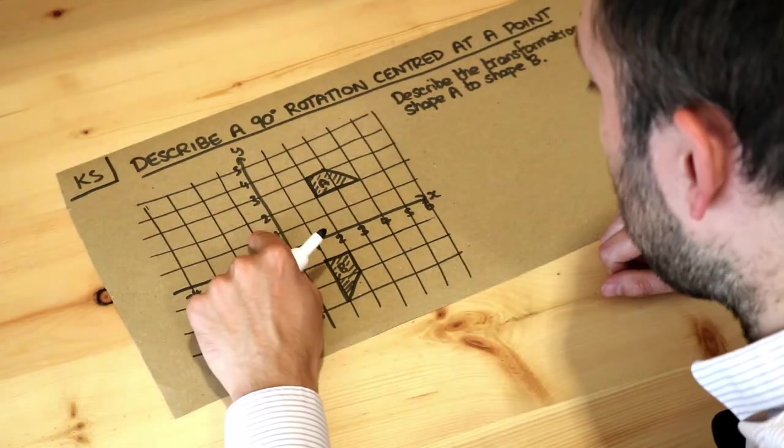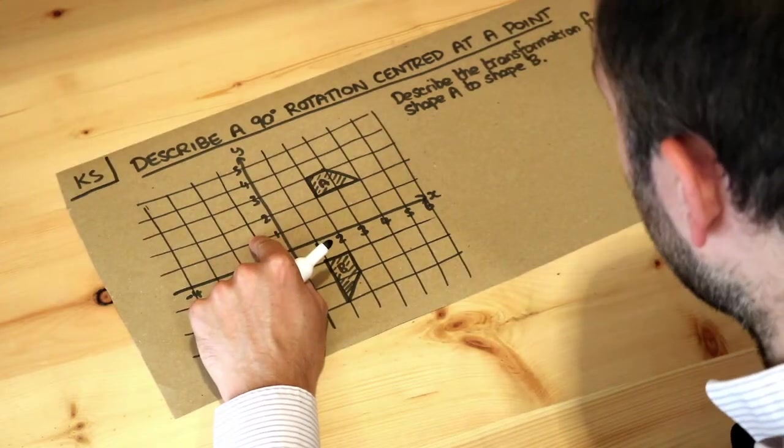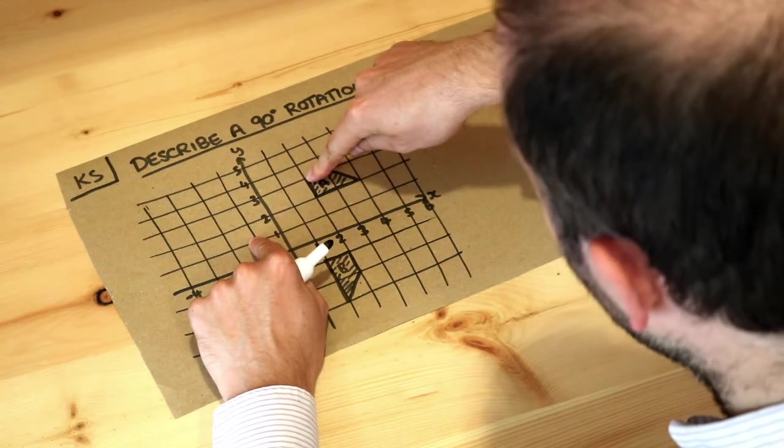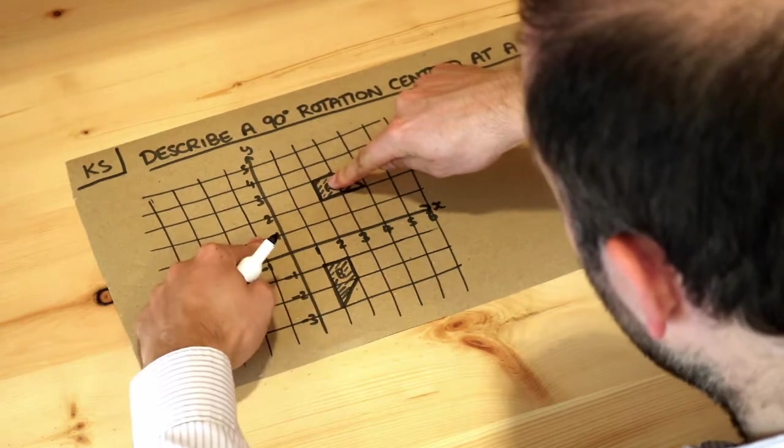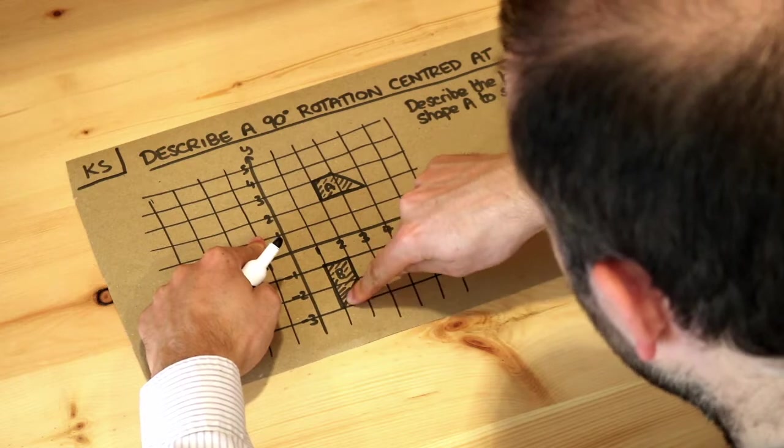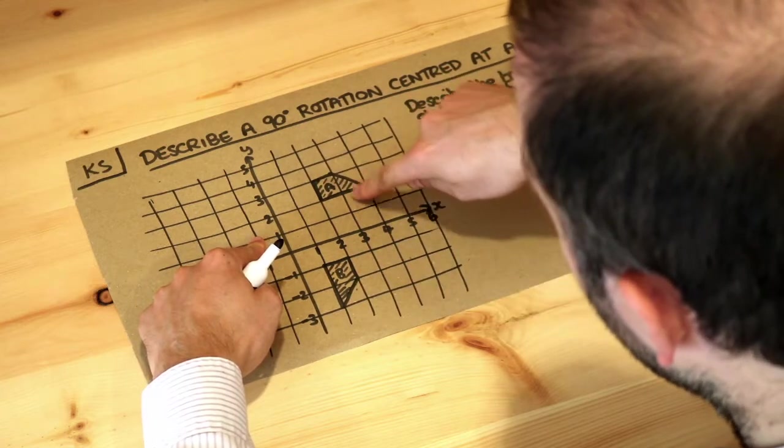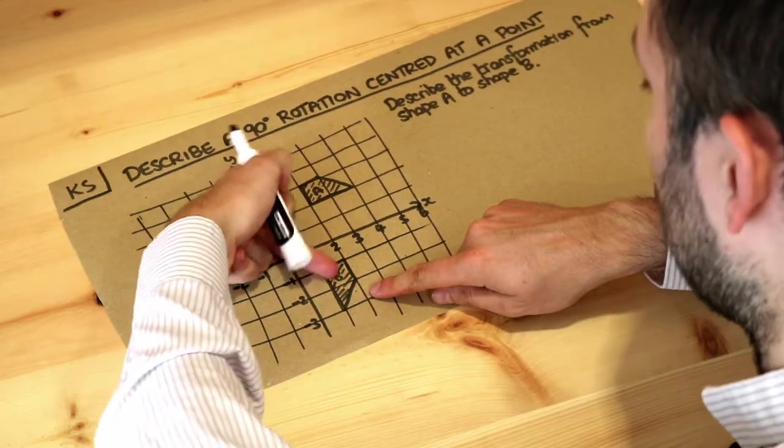Now this does look roughly right because if I put my finger here as a center rotation and this shape A was to rotate 90 degrees clockwise, we can see it's roughly ending up in the right space if my finger was spinning like that.